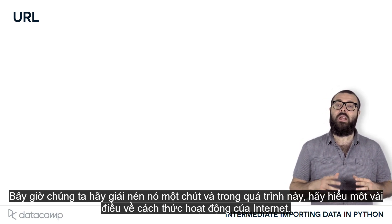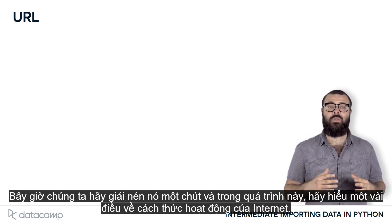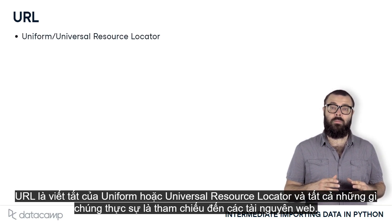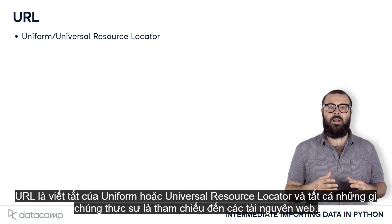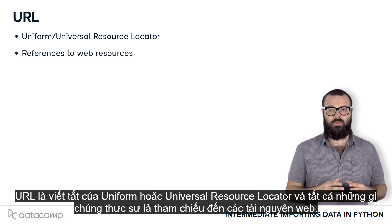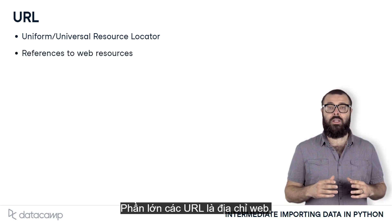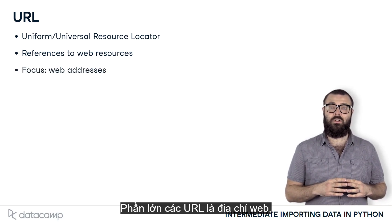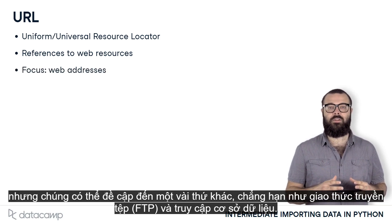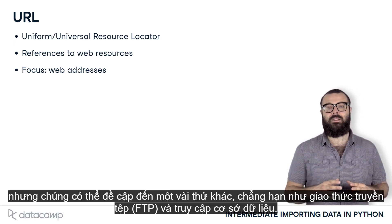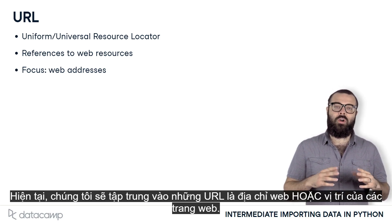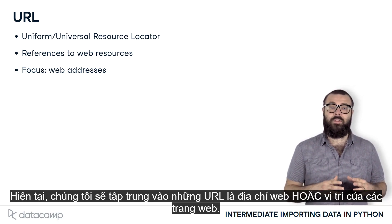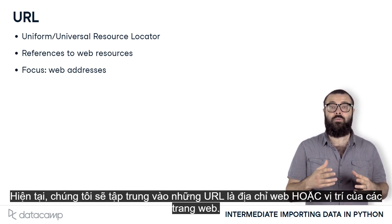Let's now unpack this a bit and, in the process, understand a few things about how the internet works. URL stands for Uniform or Universal Resource Locator, and all they really are are references to web resources. The vast majority of URLs are web addresses, but they can also refer to a few other things, such as file transfer protocols, FTP, and database access. We'll currently focus on those URLs that are web addresses, or the locations of websites.